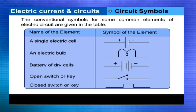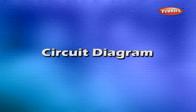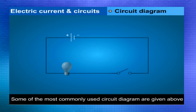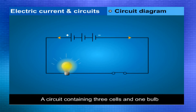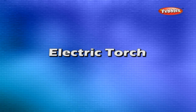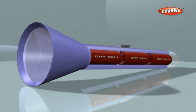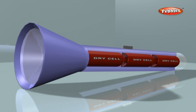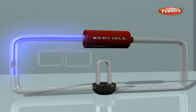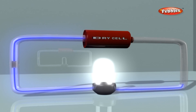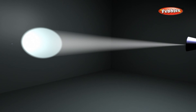The conventional symbols for some common elements of electric circuits are given in the table. Circuit diagrams shown include: a circuit containing one bulb and one cell, a circuit containing two cells and one bulb, and a circuit containing three cells and one bulb. In a pocket torch, usually two or more cells are connected together. Two or more cells are arranged end-to-end, in series, in an electric torch to increase the brightness of the bulb.